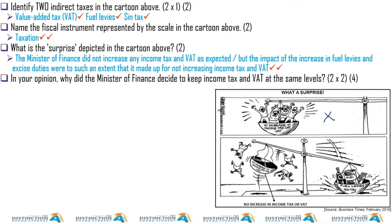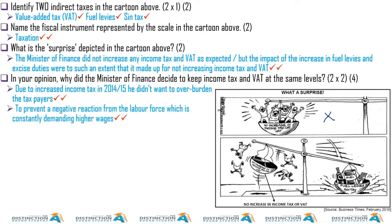In your opinion, why did the Minister of Finance decide to keep income tax and VAT at the same level? Due to increased income tax in 2014-15, he didn't want to overburden the taxpayer. So what it means is it was increased before and so now already the taxpayer is paying a lot, so increasing it will be overburdening them. To prevent a negative reaction from the labor force which is constantly demanding higher wages. Also think about the Laffer curve, you know the effect. If you increase, it might actually result in a decrease.